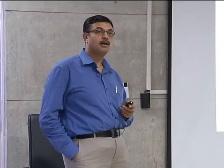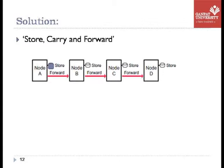Is there any other way to do the transmission from source to destination? The answer is yes. The traditional router uses store-and-forward. Can we now make it store-carry-and-forward? That is the mechanism used by the delay tolerant network, or opportunistic network.